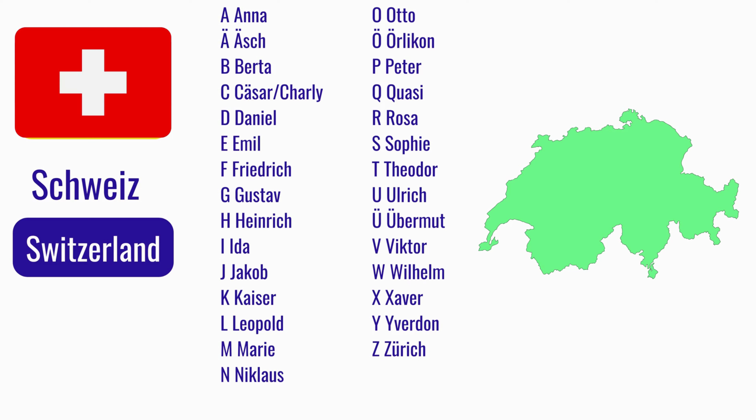Ö wie Örlikon. P wie Peter. Q wie Quasi. R wie Rosa. S wie Sophie. T wie Theodor. U wie Ulrich. Ü wie Übermut. V wie Viktor. W wie Wilhelm. X wie Xaver. Y wie Yverdon. Z wie Zürich.